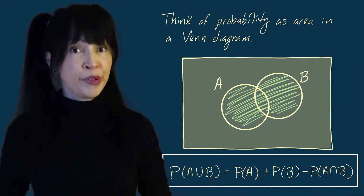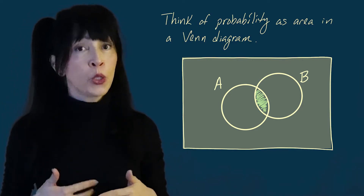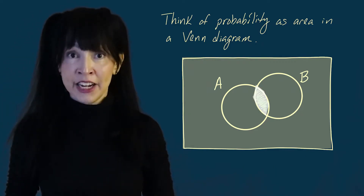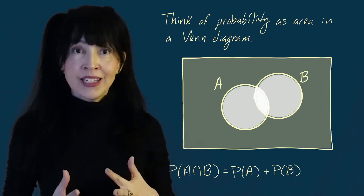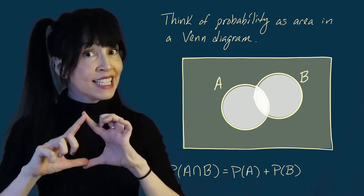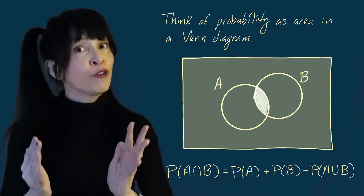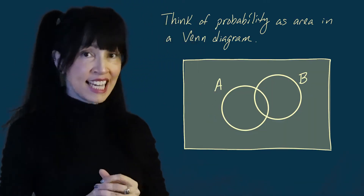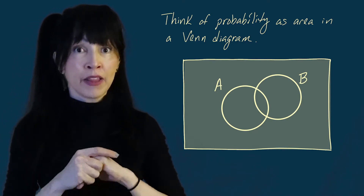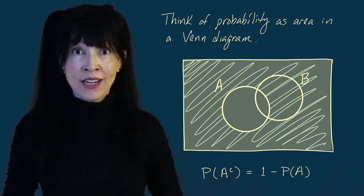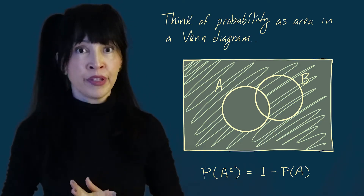To compute the probability of the intersection, one approach is to rearrange the previous formula. Alternatively, we can think of the intersection area as the full area of A plus the full area of B — which counts the overlap twice — and then subtract the entire union area, leaving a single overlap piece. For the complement rule: if you have event A and want the probability that A does not happen, that's just the area outside A, which equals one minus the probability of A.